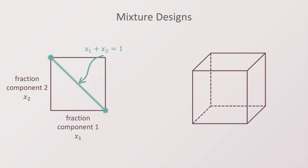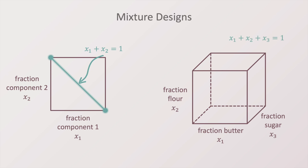The same applies for a mixture with three components. In the cookie recipe, let's make x1 the fraction of butter, x2 the fraction of flour, and x3 the fraction of sugar. The combination of the fractions x1, x2 and x3 must obey the equation x1 plus x2 plus x3 equal to 1, which falls on the surface of a triangle inscribed in the cube.